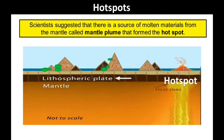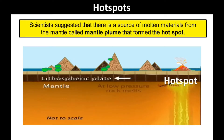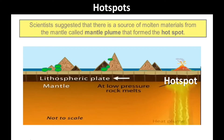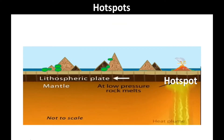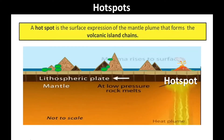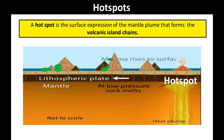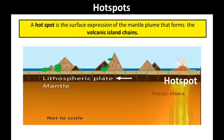Scientists suggested that there is a source of molten materials from the mantle, called mantle plume, that forms the hotspot. A hotspot is the surface expression of the mantle plume that forms the volcanic island chains.